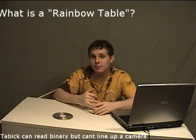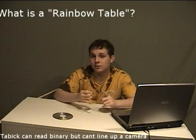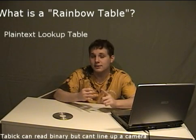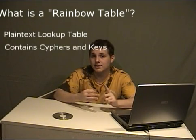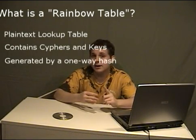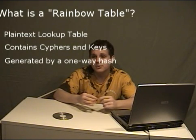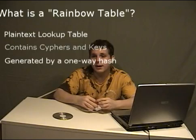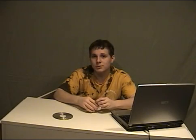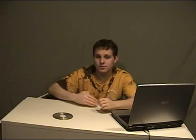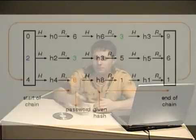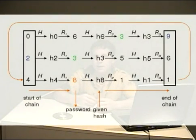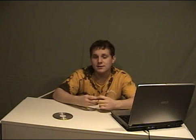Wikipedia defines a rainbow table as a lookup table that has simple plain text passwords, ciphers and keys in it, and it's generated by a one-way hash. The point of the rainbow table is simply like a brute force attack — it repeats a number of words to get the password. However, unlike a brute force attack, rainbow tables are actually pretty fast.